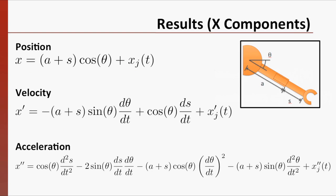This slide shows just the x components of the answer, with the value x sub j indicating the location of the joint. You can see that the expressions can easily become complicated if both s and theta change at the same time.